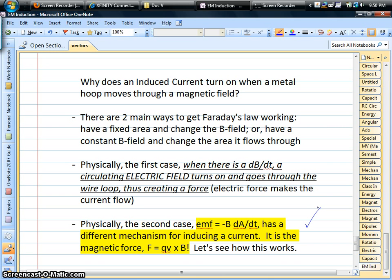So we have two main cases of how Faraday's law can work. One is where the area stays constant, it just sits there and you move a magnet around, so the magnetic field is changing. In that case, the physical reason why a current turns on is that a circulating electric field turns on, and that goes into the wire hoop and pushes electrons around and makes a current.